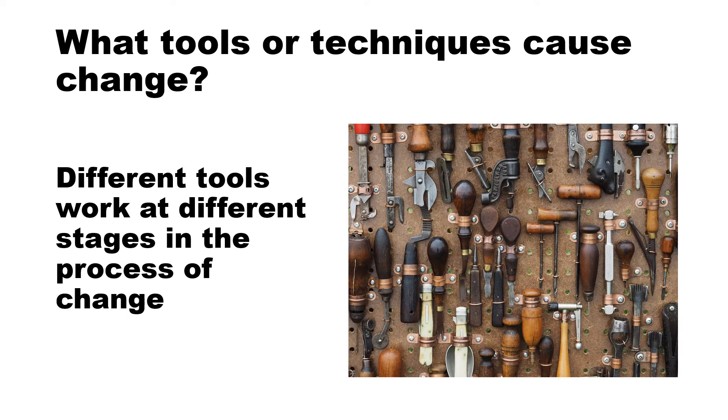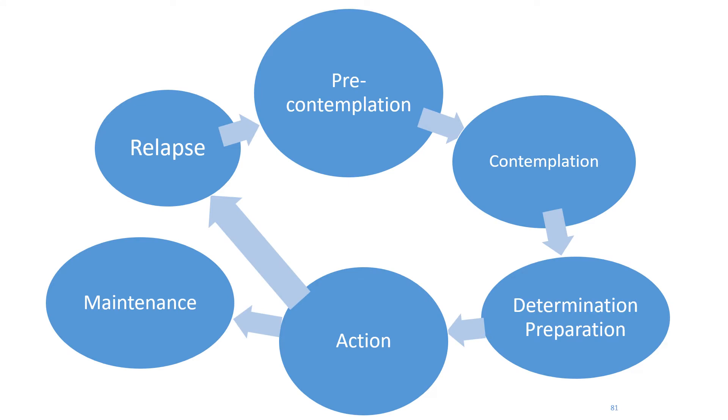What tools or techniques cause change? It's important to know that different tools work at different stages in the process of change. This model includes a number of discrete stages: pre-contemplation, contemplation, determination or preparation, action, maintenance and relapse. Sometimes this is pictured as a spiral as people may move through these stages multiple times, each time getting significantly better for the problem they're trying to change.